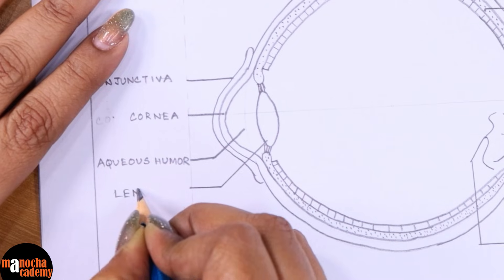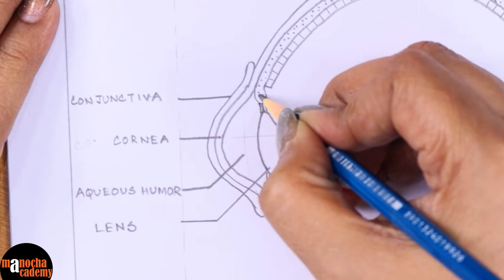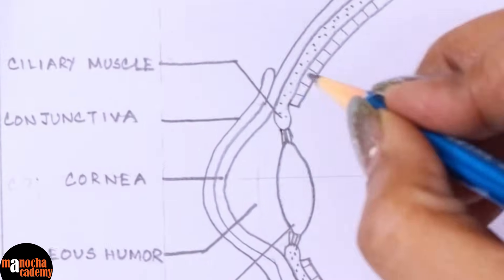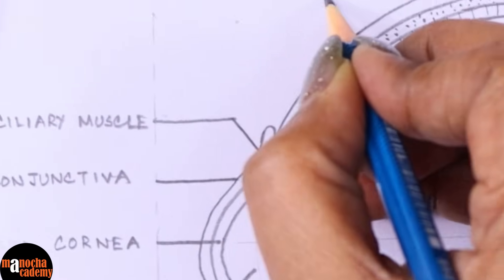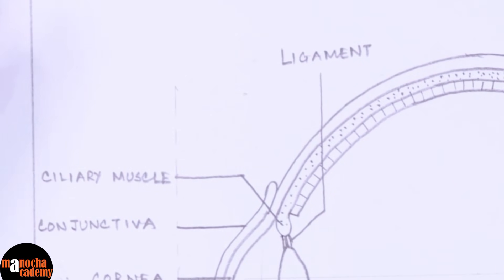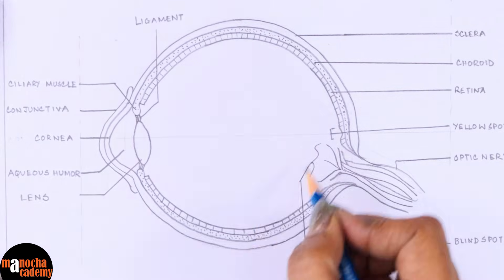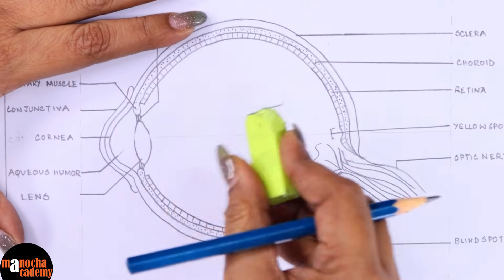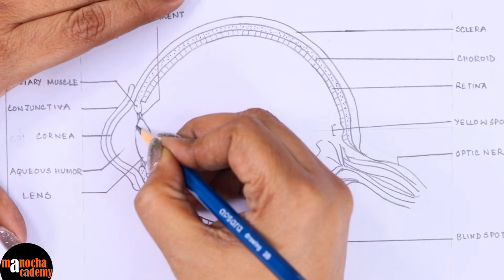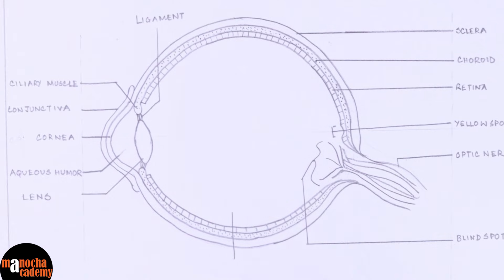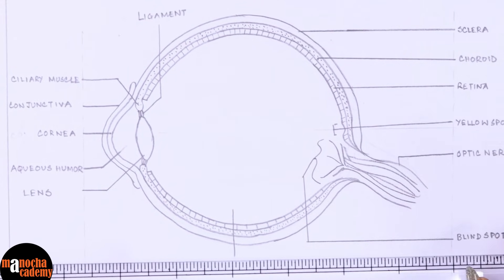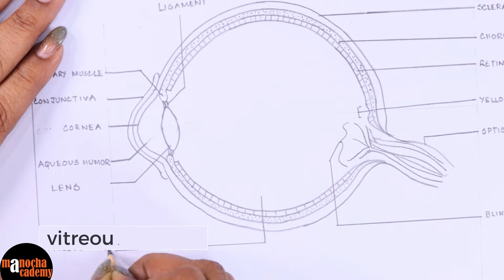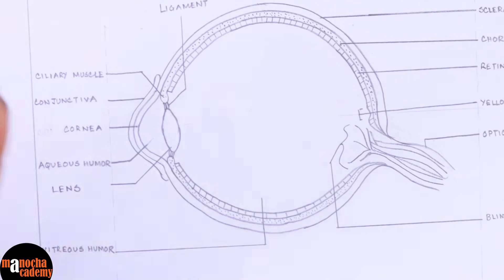Here we have the lens — we will label the lens. This swollen region is known as the ciliary muscles, and these are the ligaments that attach the lens to the ciliary muscle. Finally, in this space we also have a fluid which I will label by taking a line from here. This is known as the vitreous humor.